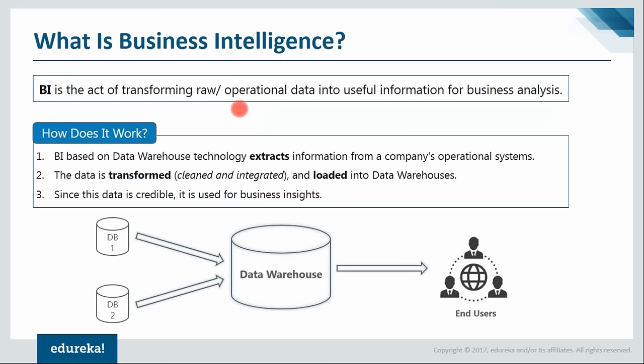If you're a well-established company, you look at your past results - how your company has done over the past six months, the last quarter, or the last year - and then come up with proper plans for your future. This entire act is called business intelligence. BI is based on data warehouse technology. It extracts information from a company's operational systems, the extracted data is first transformed - cleaned and integrated - and then it's loaded into data warehouses. Data can be in the form of flat files or databases.